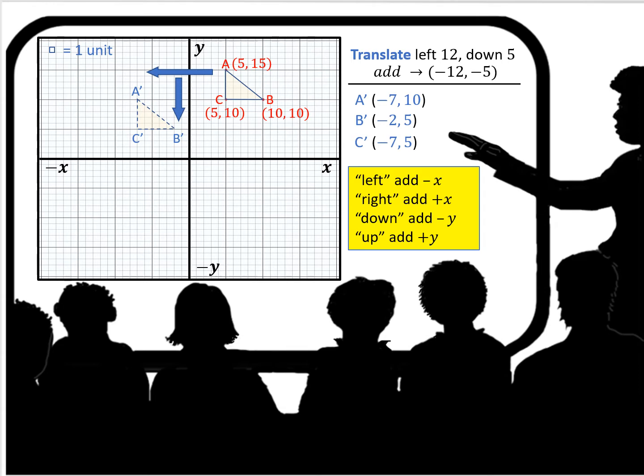In this case, we're going to be adding two negatives. So to each of the xy coordinates of each point, for point A we have 5 and 15. We're going to subtract 12 from the x coordinate and subtract 5 from the y coordinate, or add a negative, whichever you prefer. So 5 plus negative 12 is negative 7. That would be our new x coordinate. And 15 plus negative 5 is positive 10. That would be our y coordinate for A prime.